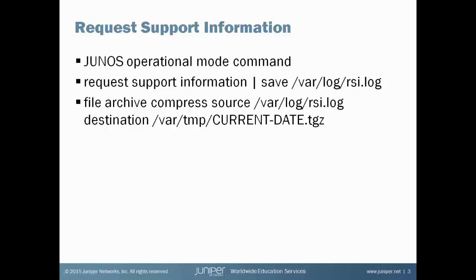The command is Request Support Information. If you hit Enter after typing that command, the output will appear on your screen. The output is thousands of lines, so having it appear on your screen is probably not going to help you very much. It's common to use Request Support Information followed by a pipe save, because we want to redirect the output of this command to a log file that we can then copy from the platform and send to Juniper Networks when we open a support case.